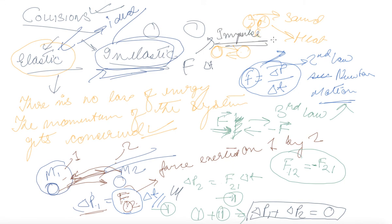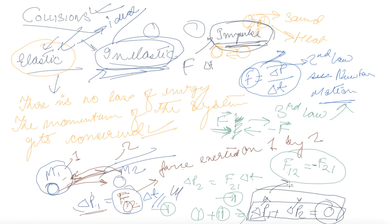So it does not matter whether you increase the momentum of p1 or the momentum of p2 — the overall total momentum is always constant. That is, the system's momentum is conserved. This is very important, and if questions do come, please write this particular answer in your examination.